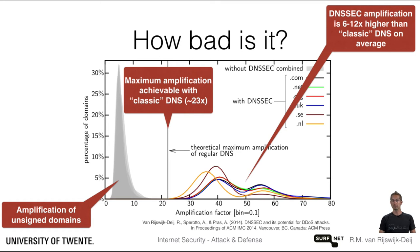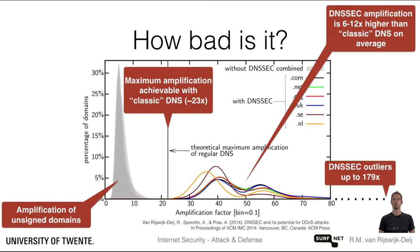In fact, we have seen outliers with amplification factors up to 179 times. This means that attackers can easily achieve large attack volumes of multiple gigabits per second by sending only a small amount of traffic themselves.